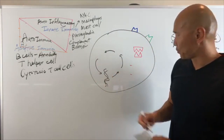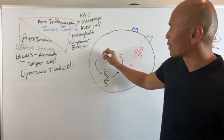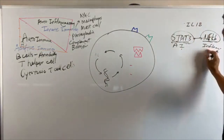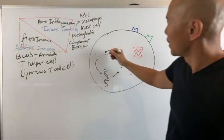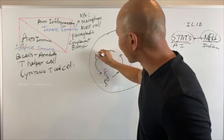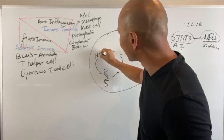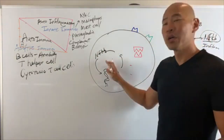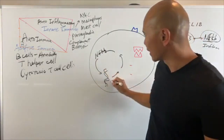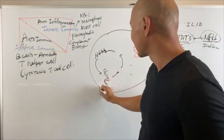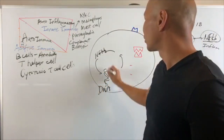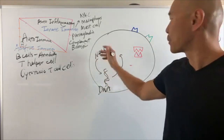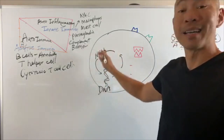Remember, you have this thing called NF-kappa B, which is your final common pathway. It's a nuclear protein, meaning it triggers the DNA. This is your DNA — it triggers your DNA to create inflammatory cytokines. It becomes a loop, a cycle.